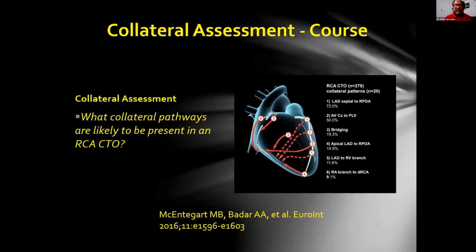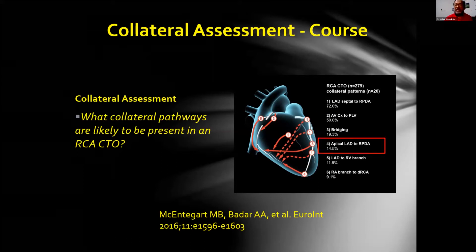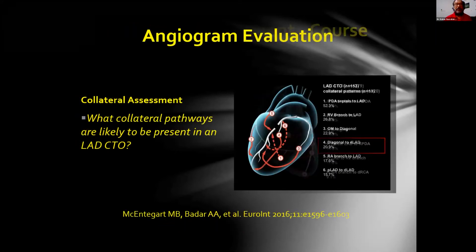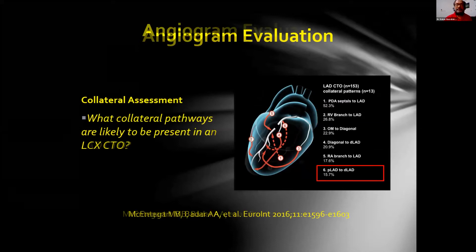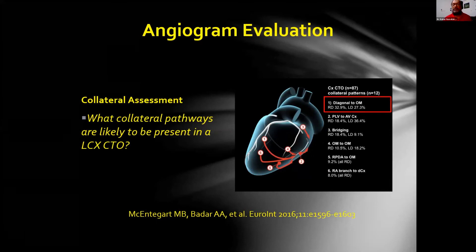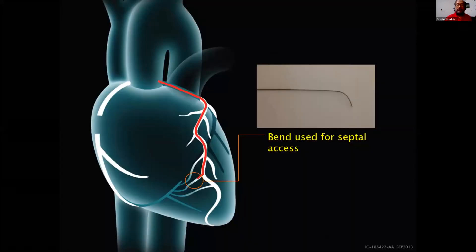For collateral assessment during RCA CTO: LAD septal to RPD at 70% can be crossed; AV crux to PLV at 50% can be crossed; and sometimes apical LAD to RPDA. For LAD CTO, you can choose PDA septal to LAD, or RV branch to LAD, or RA branch to LAD. For LCX CTO, you can use diagonal to OM, or PLA to LCX, or LAD to LPDA, or OM.